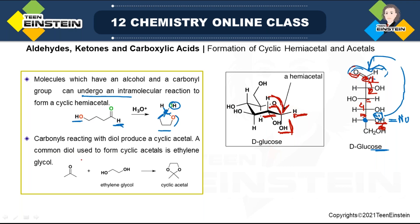Another important fact: if you take a diol molecule where two OH groups are present in the same molecule, you do not need two separate alcohol molecules for one carbonyl. These two OHs present in the same molecule — first one OH will attack forming hemiacetal, then the other OH will attack, ultimately forming a cyclic acetal. For example, acetone reacting with ethylene glycol (HOCH₂CH₂OH) gives a cyclic acetal where one part comes from acetone and the other part — O-CH₂-CH₂-O — from ethylene glycol.